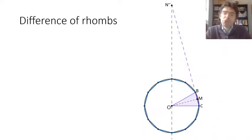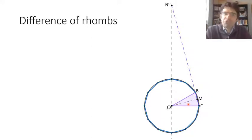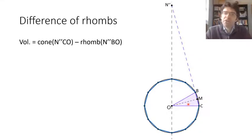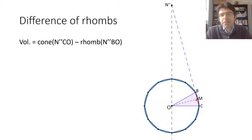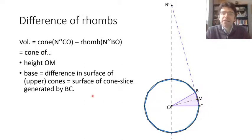Finally, the purple triangle, when that revolves, becomes almost like a volcano crater. This is effectively a cone minus a rhomb. Both the cone generated by triangle N-double-dash CO and the rhomb generated by triangle N-double-dash BO have volumes equal to cones with height OM and bases equal to the upper outer surface of those respective shapes. So the difference between them is again going to be a cone with that height and the base equal to the surface of a cone slice — this time the one generated by side BC.